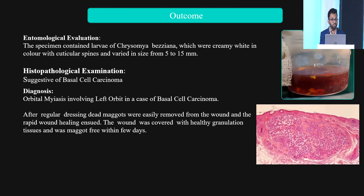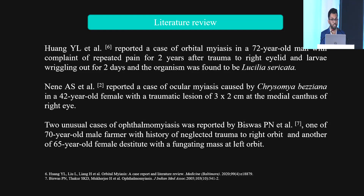On entomological evaluation, the species was found to be Chrysomya bezziana. Histopathological examination suggested basal cell carcinoma. The diagnosis was orbital myiasis involving the left orbit in a case of basal cell carcinoma. In literature, Huyang Weil et al. found orbital myiasis where the organism was Lucilia sericata and the cause was trauma. Neneas et al. found ocular myiasis in a traumatic lesion where the organism was Chrysomya bezziana. Bishwash Pien et al. reported two unusual cases of ophthalmomyiasis — one with a fungating mass and one with trauma — and in both cases the organism was Chrysomya bezziana.